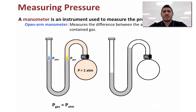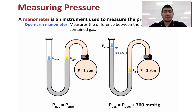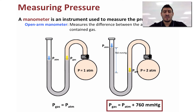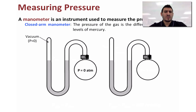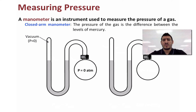If we fill the manometer with a gas at two atmospheres pressure, the levels are not the same — the difference between the two levels equals one atmosphere. So the pressure of the gas equals the atmospheric pressure (one atmosphere) plus an additional atmosphere from the difference in height of the two levels, which in this case equals 760 millimeter Hg. Now let's discuss the closed arm manometer.